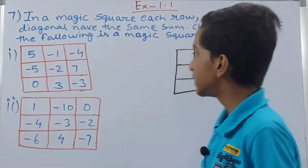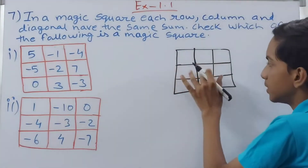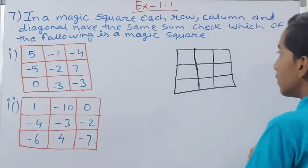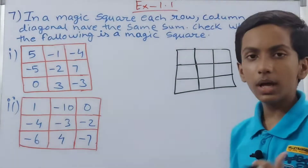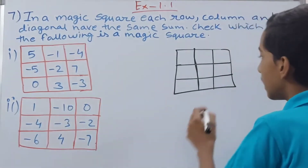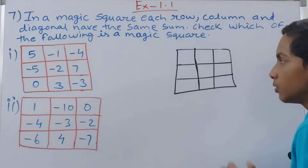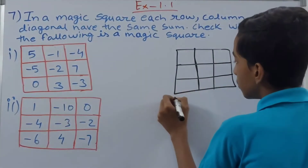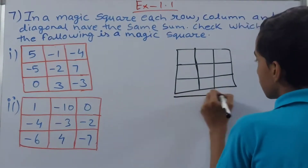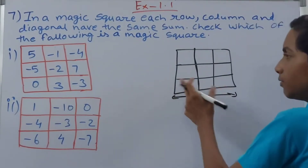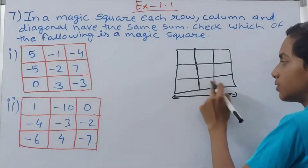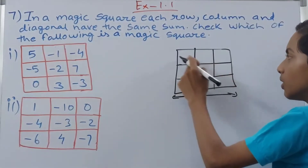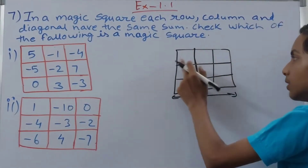When some numbers are written inside these boxes, a magic square is one where when you add the rows — rows are the horizontal parts — you add the three numbers of the first row, you get a sum. You add the three numbers of the second row and the third row, and the sum will always be the same in a magic square.